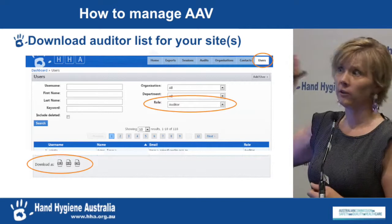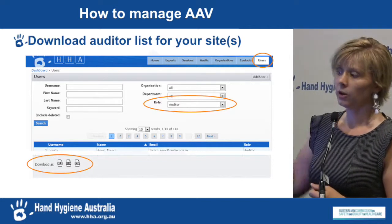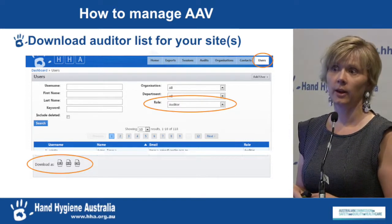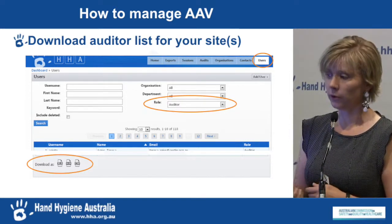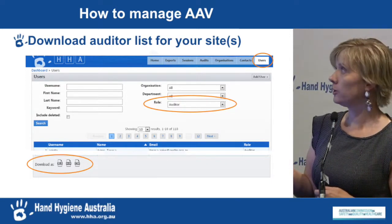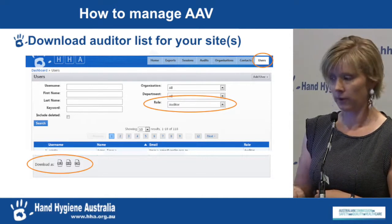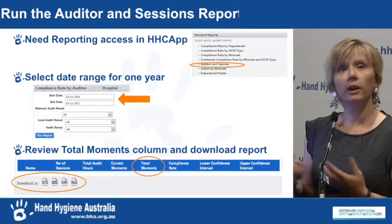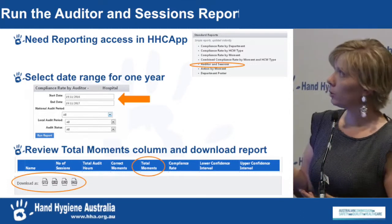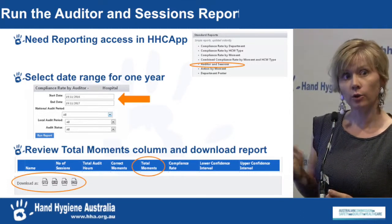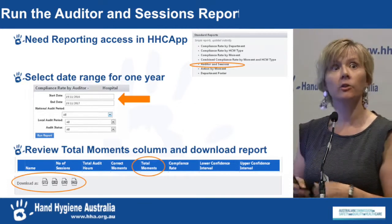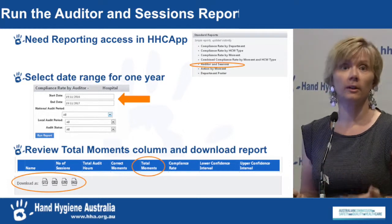Firstly, if you haven't tried using the users tab in HICAP, you can filter for the role of auditor and download your auditors for your site. All reports in HICAP are downloadable — go to the users tab, put 'auditor' in the role field, and download the whole list to an Excel file. Then go to HICAP and run the auditor and sessions report over a date range of one year, and you can immediately see in the total moments column who has collected 100 moments.